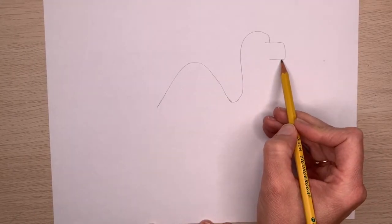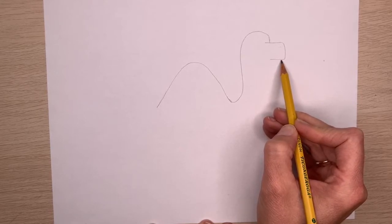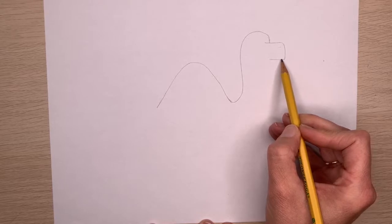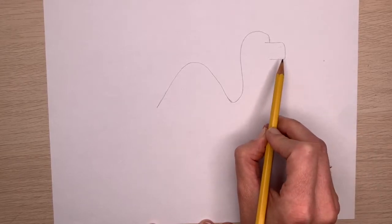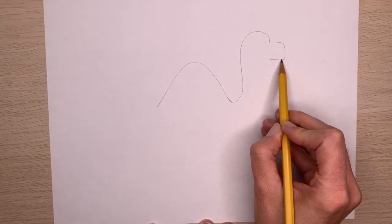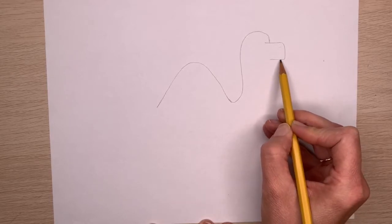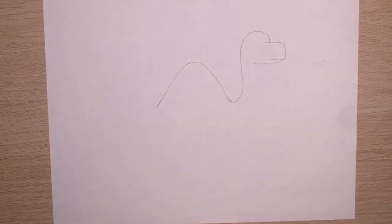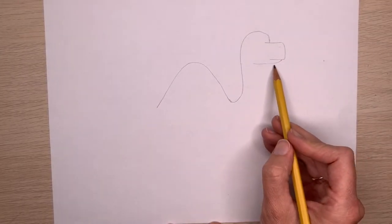And then we'll make the bottom jaw of your dinosaur by coming just a little ways in from the very tip of the snout. So you can see where my pencil is, right? About here. And you're just going to make the bottom jaw line of that dinosaur. It curves down a little bit and comes in.